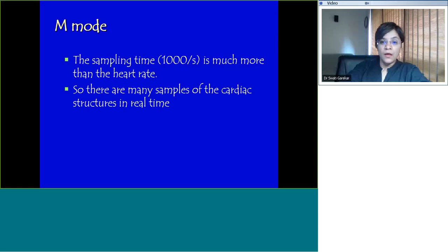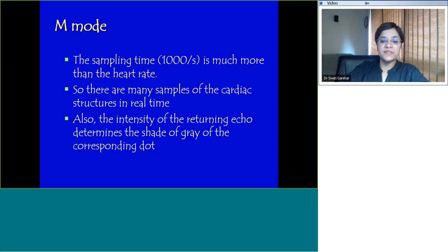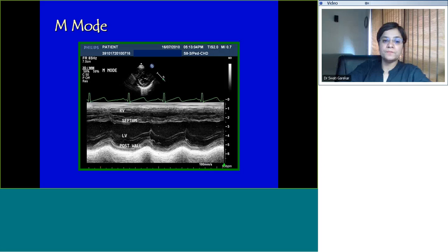In this cartoon, on the y-axis you have distance from the transducer. Here's your probe, the chest wall, sound waves hitting through the various heart structures. A millisecond later you have another sound wave going through the same bit of the heart. On the x-axis you have time. What it's telling you is what happens when you keep on interrogating the same slice of the heart over time and you display it in this format. Because our sampling rate, around thousand per second, is much more than the heart rate, there are many samples of cardiac structures in real time. The second aspect is the gray scale. How intense the returning echo is determines the shade of gray of the corresponding dot.